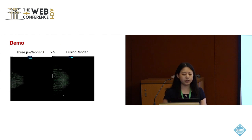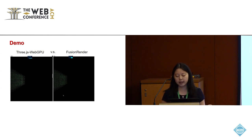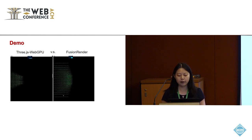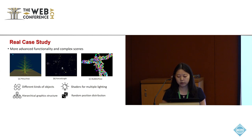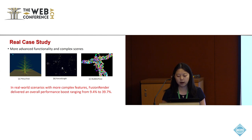Here we present a demo comparing Three.js WebGPU and Fusion Render. It can be observed that Fusion Render achieves higher FPS and smoother rendering. We explore the performance of Fusion Render in real-world scenarios with more advanced functionality and complex scenes. These examples have different kinds of objects, shaders for multiple lighting, hierarchical graphics structure, or random object position distribution. As a result, Fusion Render leads to performance improvement ranging from 9.4% to 39.7%.